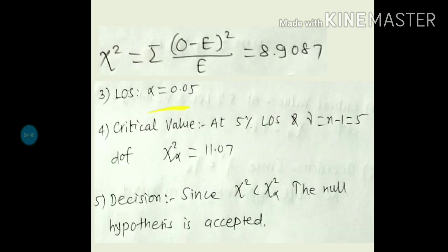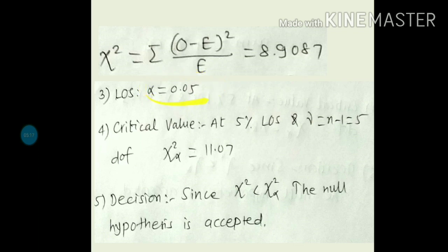Level of significance is not given, so we set it to 5%, i.e., 0.05. At 5% level of significance and n minus 1 degrees of freedom — there are 6 observed frequencies given, so n minus 1 is 5. Critical value is 11.07. Use the chi-square distribution table: fix level of significance 0.05 in the topmost row and degrees of freedom 5 in the first column — the common value is the critical value 11.07. Computed value 8.91 is less than critical value 11.07, so null hypothesis is accepted — the given die is unbiased.